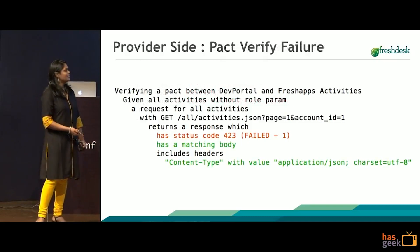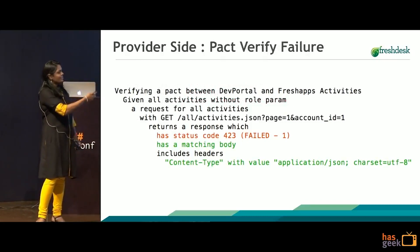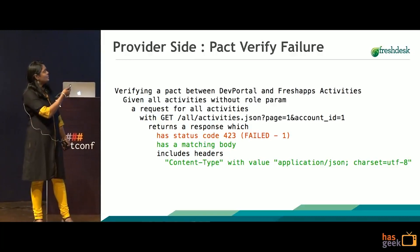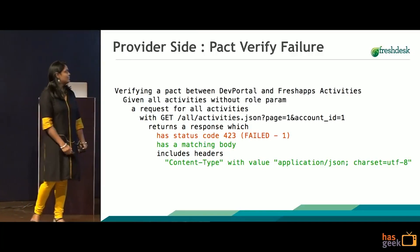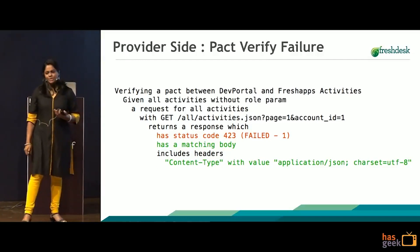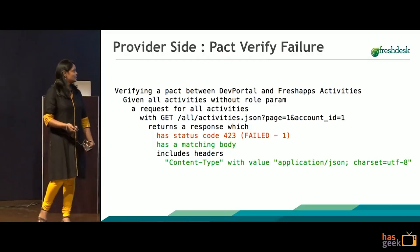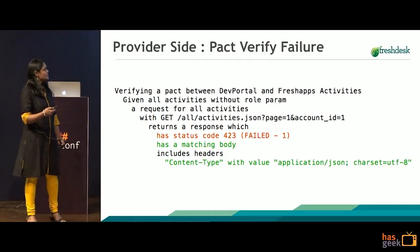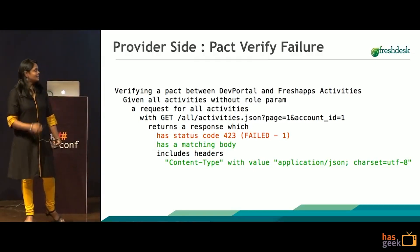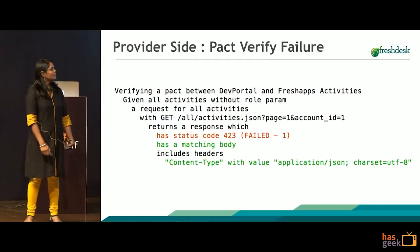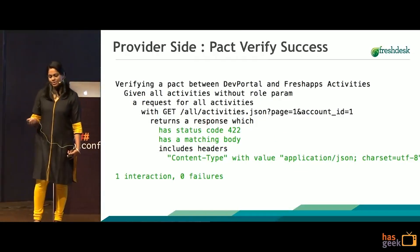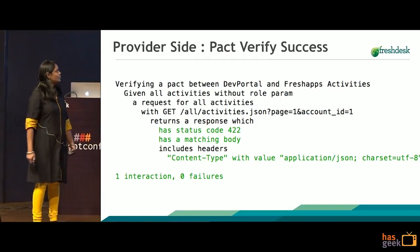If there is a failure, it would specify where it has failed and why it has failed. This is a sample failure — there are three parameters it checks: the status code of the response, whether the body is matching, and the headers. If everything goes well, then it succeeds and this is how it would look like.